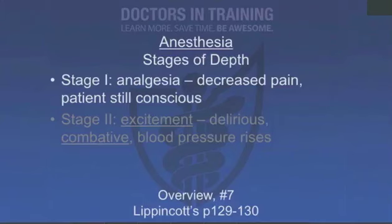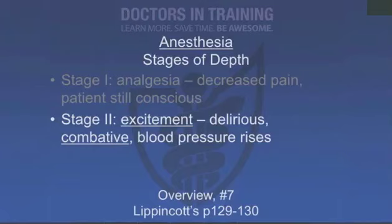These stages were based on how ether worked. Nowadays they aren't as obvious because we induce people very rapidly. Stage one is analgesia — decreased pain, but the patient is still conversant and conscious. They're feeling pretty good but still awake. At the end of that you can get some amnesia going. Stage two is the stage you don't want to be in long — it's called excitement. Patients get delirious, combative, blood pressure goes up, respiratory rate goes up, and they can vomit.